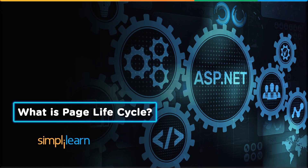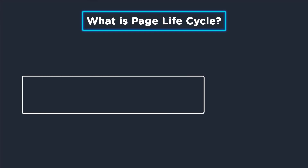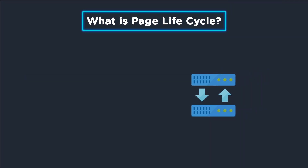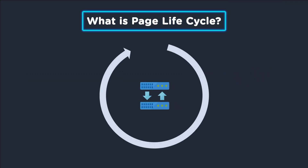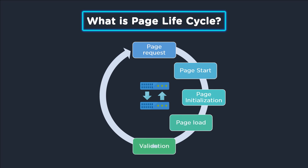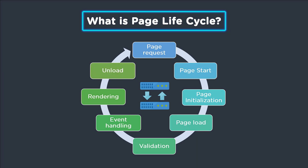Now that we know about the application life cycle, let's have a look at the page life cycle. The page life cycle involves initialization, restoring, and execution. When an ASP.NET page is called, it goes through some phases before the response is sent to the user. These phases are: page request, page start, page initialization, page load, validation, event handling, rendering, and unload.